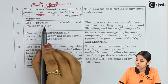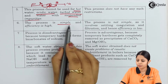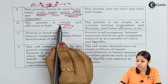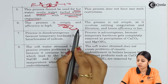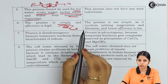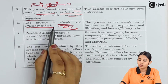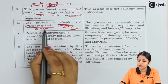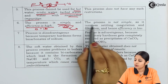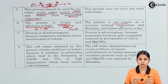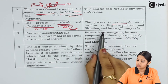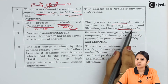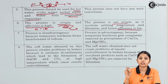Point six: the zeolite process is simple and its efficiency is high. There is just a bed of zeolite — water is poured in, impurities react, precipitates are filtered out, and soft water is obtained. Efficiency is high because the residual hardness is only 0 to 15 ppm. In contrast, the lime soda process is not simple — it involves settling, coagulation, and filtration — and its efficiency is comparatively low at 15 to 50 ppm.